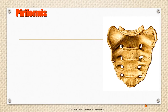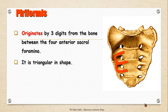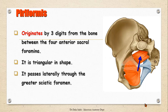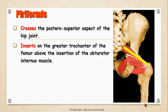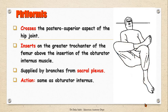The other muscle at the lateral pelvic wall is the piriformis muscle. It takes origin by three digitations from the front of the sacral bone between the anterior sacral foramina. It is piriform or triangular in shape and leaves the pelvis by passing laterally through the greater sciatic foramen. It then crosses the posterior superior aspect of the hip joint to insert into the greater trochanter of the femur, just above the insertion of the obturator internus. It is also supplied by branches from the sacral plexus and has the same action: abduction and lateral rotation of the hip joint.